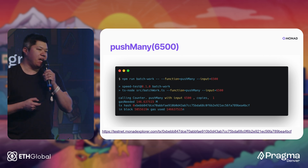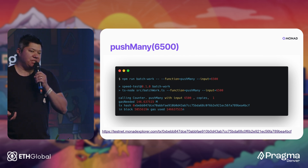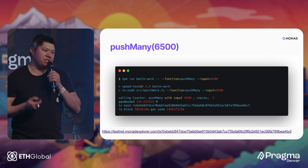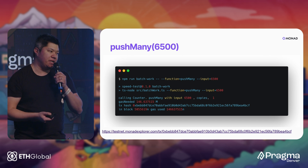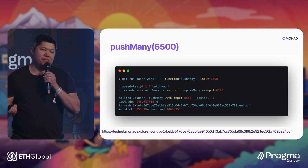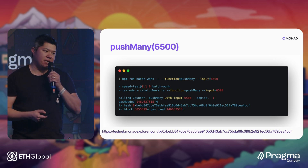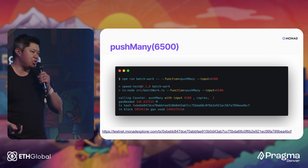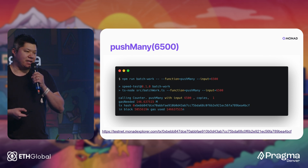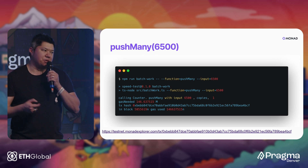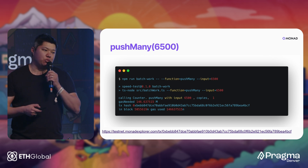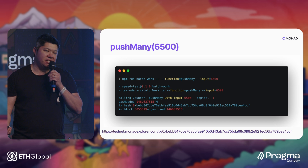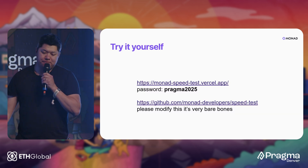Basically what we have is a really high performance, really high throughput environment in which anyone can build anything and worry a lot less than we do right now about gas optimization — and get really high performance and really fast finality as well. Monad has one second finality and is fully globally distributed.